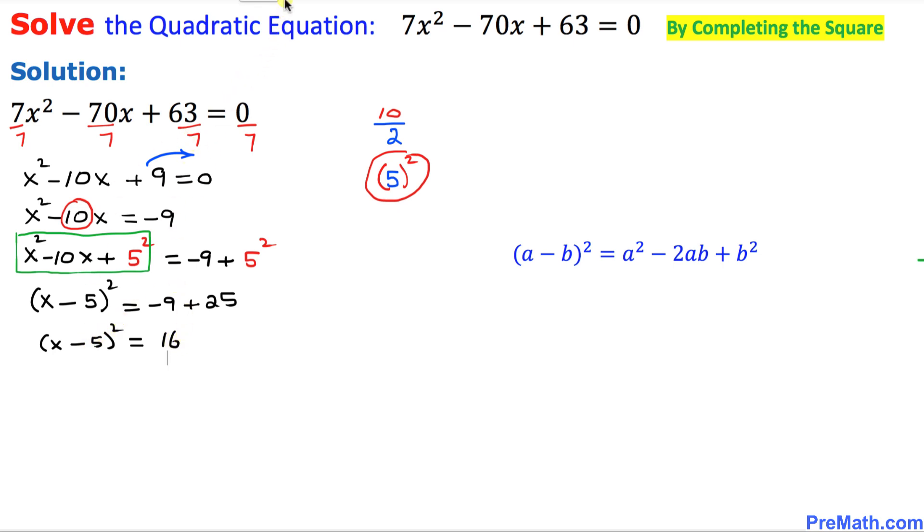We want to undo this square, so we are going to take the square root on both sides. This square and square root, they undo each other, they cancel each other out. So we simply got x minus 5 equal to positive or negative 4.